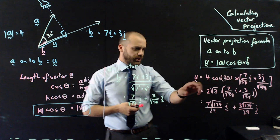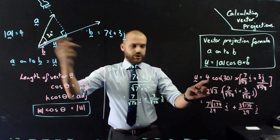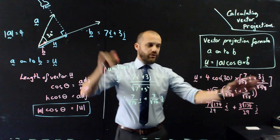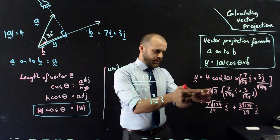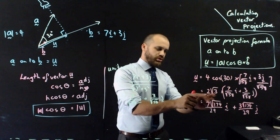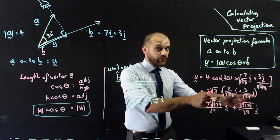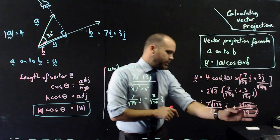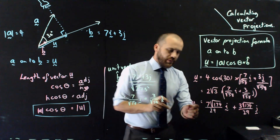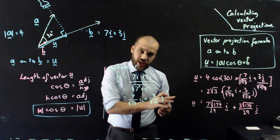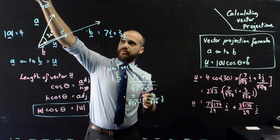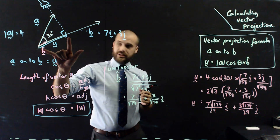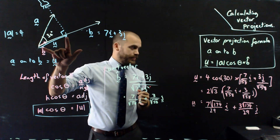We finish the example by plugging into the formula: 4 (magnitude of A) times cos θ (angle between them) times the unit vector of B. Since 4 cos 30° = 2√3, we get 2√3 times the unit vector of B, and we get our answer in terms of i and j. That vector is the shadow when a torch is held perpendicularly to vector B.